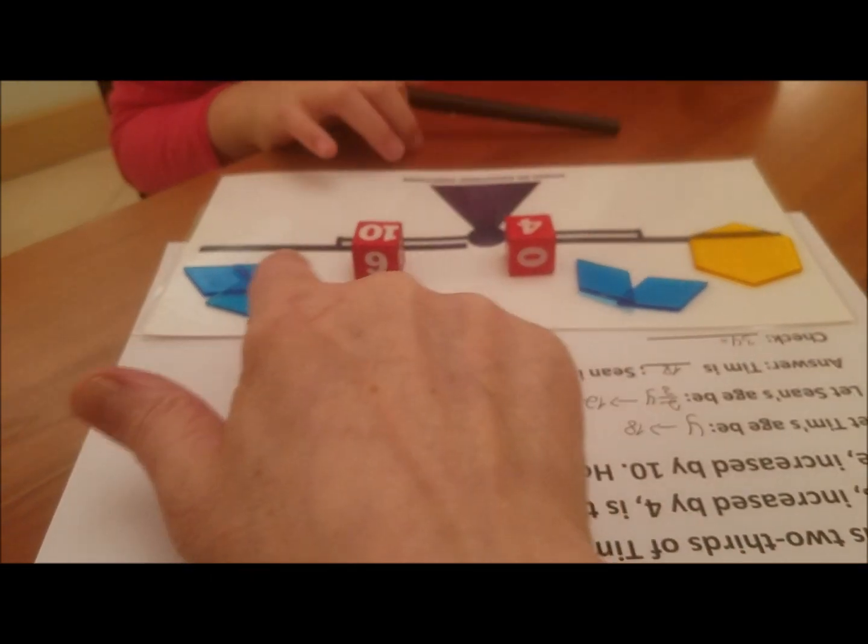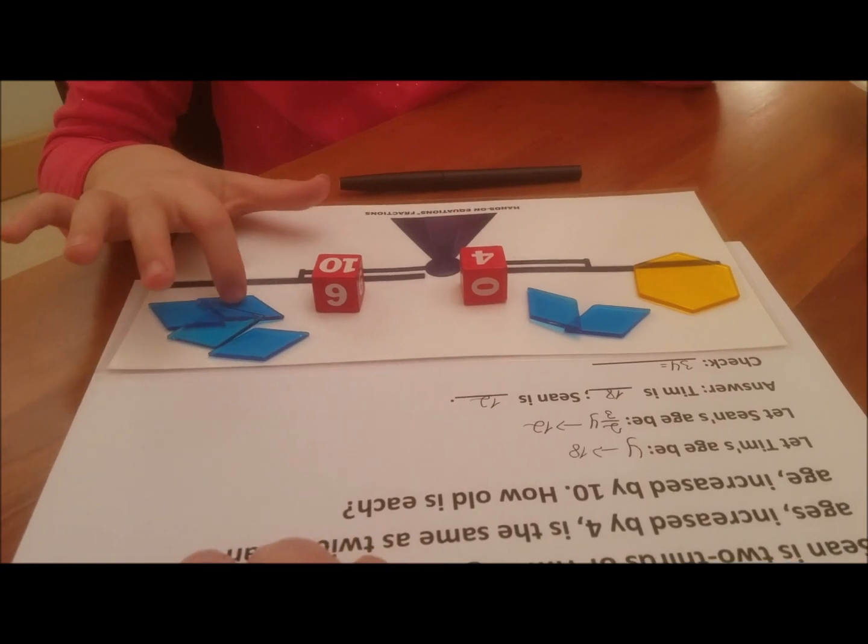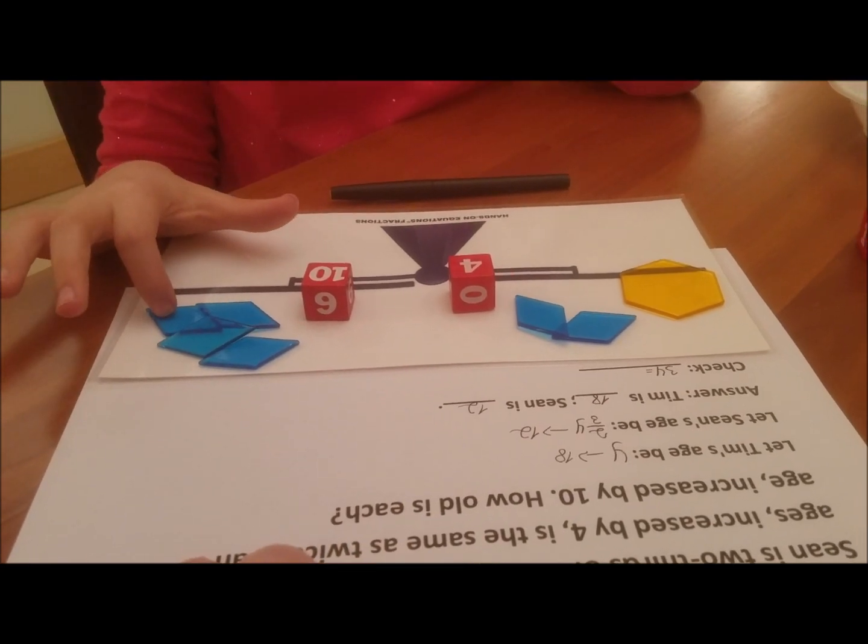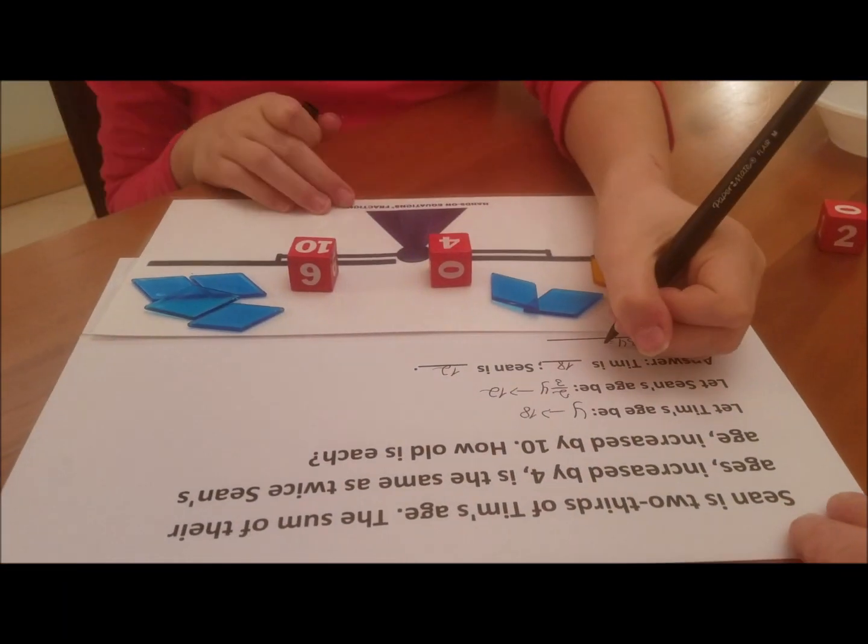And on this side, how much is each blue block? Six. And you have four of those. So, how much is that? 34. 24 and 10 is 34.